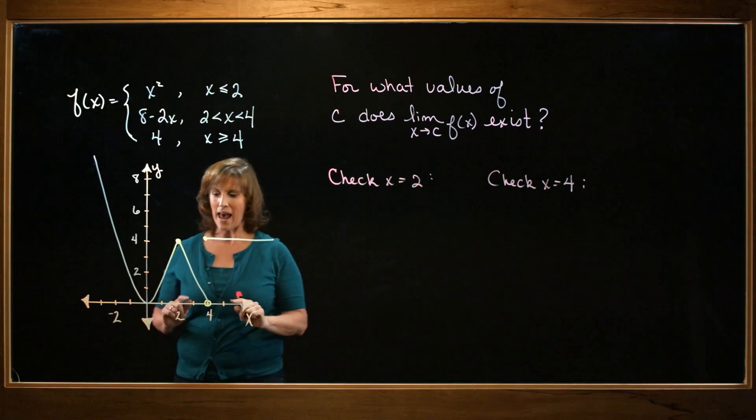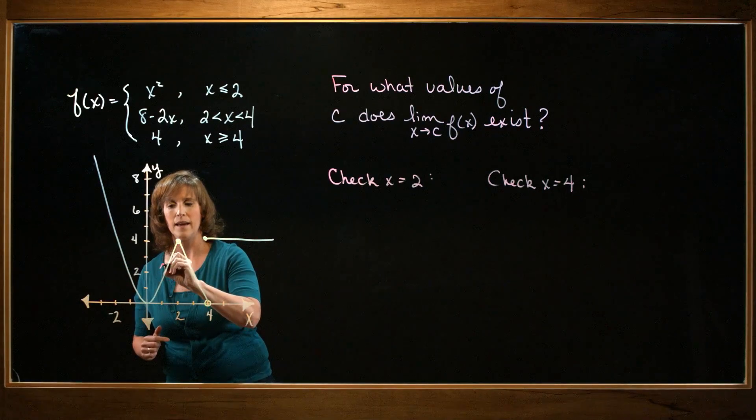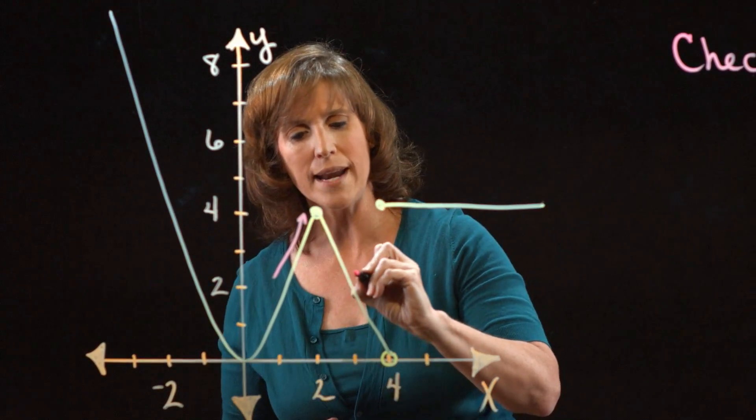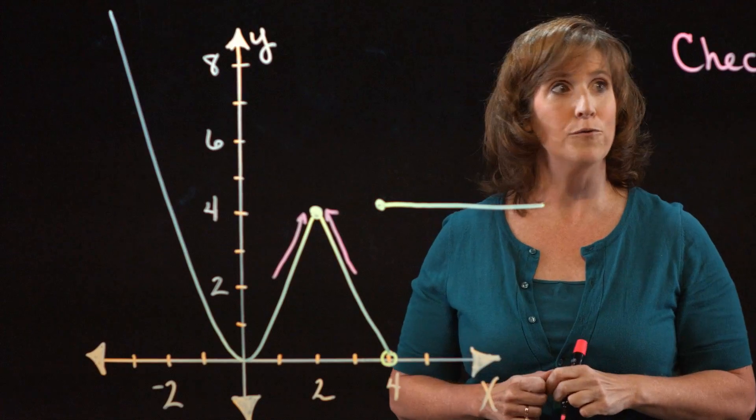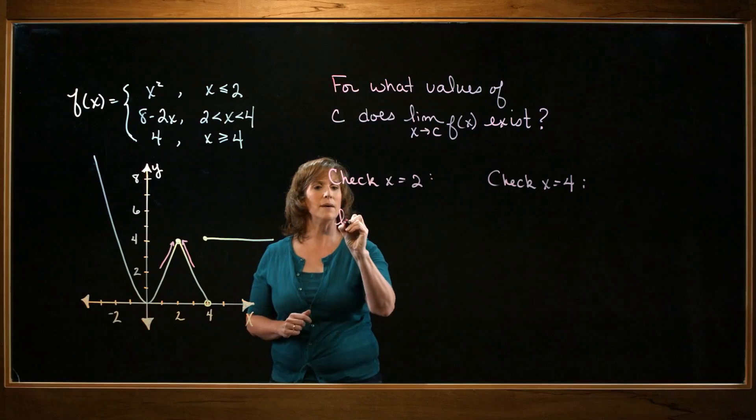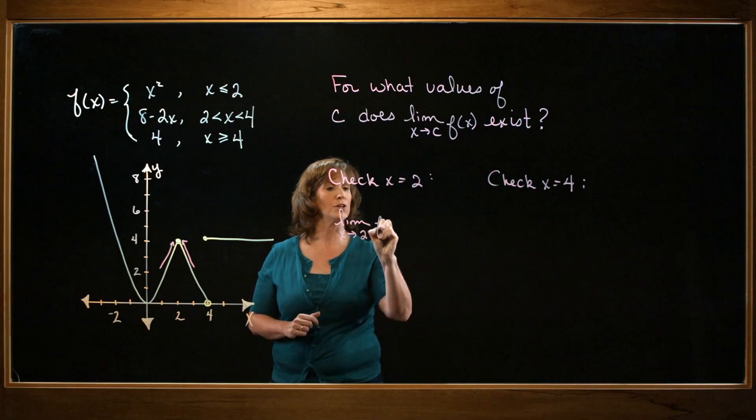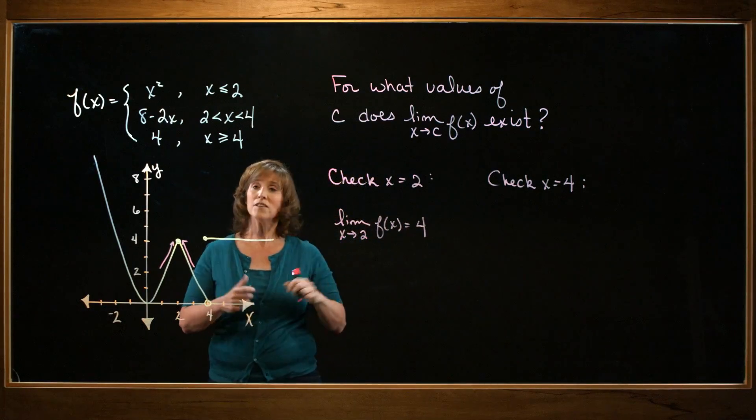All right, so let's see what happens as x approaches 2. From the left-hand side, I'm approaching the value of 4. From the right-hand side, I'm also approaching the value of 4. So the limit of my function as x approaches 2 is 4, so the limit exists.